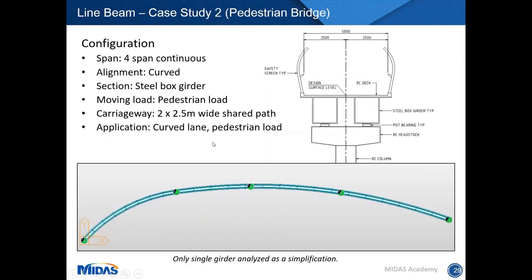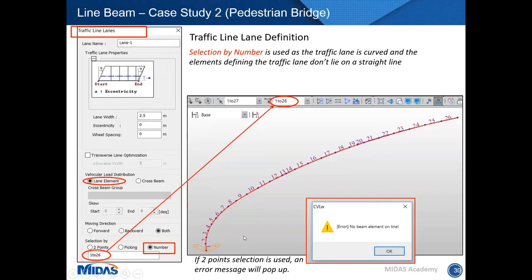The second case is a pedestrian bridge — a four-span continuous bridge curved in profile. This example demonstrates how to define curved traffic lanes and how to use the pedestrian load. For a curved bridge, you can't use the two-point method because no elements are found along a straight line. Instead, use selection by number — select all elements on the traffic lane and enter them in the tab.